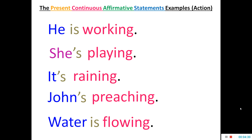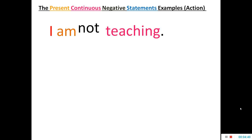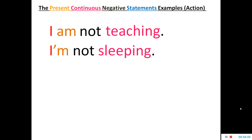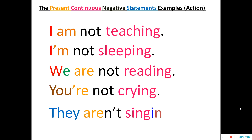Now we look at negative statements in the present continuous tense. We simply put 'not' after the auxiliary — that becomes our negative statement. For example: 'I am not teaching.' You can also make contractions. 'I am not sleeping.' 'We are not reading.' 'You are not crying.' 'They are not singing.' You can make contractions either by contracting the auxiliary verb and attaching it to the subject, or by contracting 'not' and attaching it to the auxiliary verb.